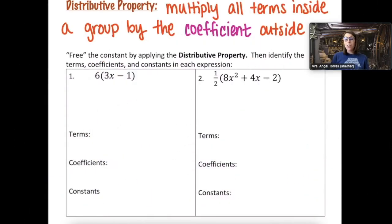All right, our last examples here. The directions are first, free the constant by applying that distributive property. Then identify the terms, coefficients, and constants in your leftover expression. I'm going to let you try these two on your own, and then we'll go over them together.